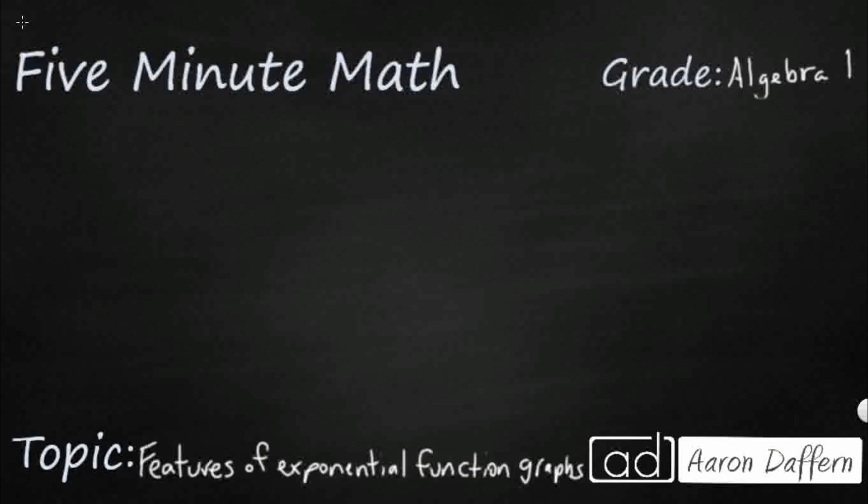So when we're talking about exponential functions, here is our standard form: y equals a times b to the x. Sometimes that y is going to be an f of x or something like that, g of x. But we really need to focus on these two terms, the a and the b, because you can actually tell an awful lot, even if you don't get a visual graph, you just get an equation like this.